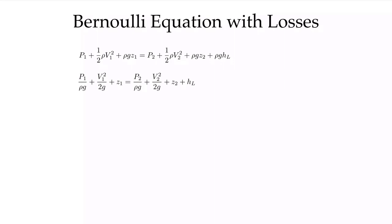We can divide the whole expression by rho·g, and we see this term h_L. H_L is always going to be positive — it's due to losses. Friction cannot add energy to the flow; it can only take energy away. H_L is composed of two components: major and minor losses. The major losses are due to friction in the pipe, and that is the focus of this video. In subsequent videos, we'll discuss the minor losses and how to calculate them.